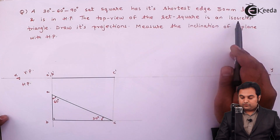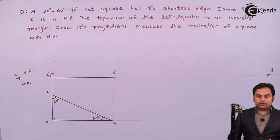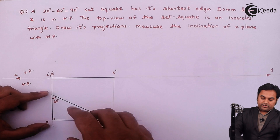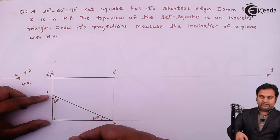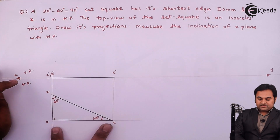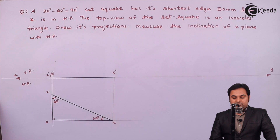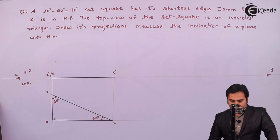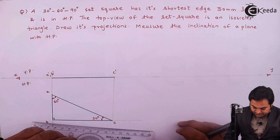The next condition is: the top view of the set square is an isosceles triangle. At first this set square is kept horizontally on the ground. Next I'll keep AB as constant and fixed, then picking up C, I am going to lift this set square. When I lift it, I should get an isosceles triangle — meaning side AB and side BC should be equal. The inclination is not given; they said to measure it. If inclined to HP it will be seen in VP, so I'll project side AB first.